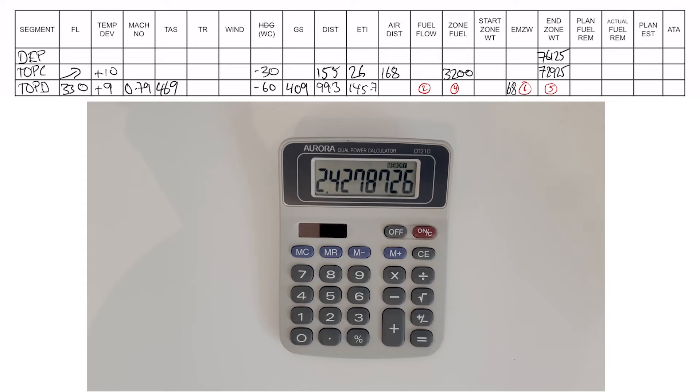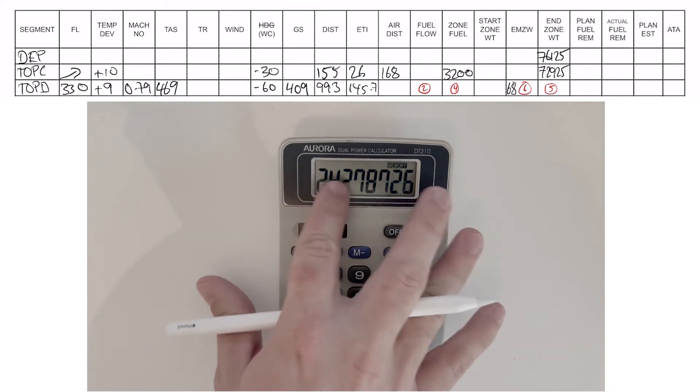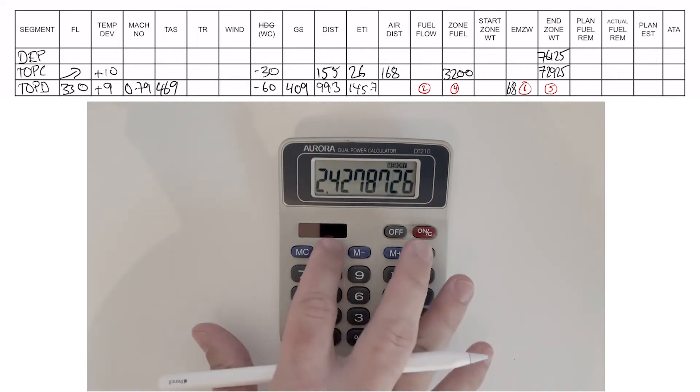Right now I've got an accurate ETI in hours on the scratch pad and an accurate fuel flow per hour in the memory function. To find zone fuel, I'll multiply the ETI by the fuel flow, which is in memory recall. There's our ETI multiplied by memory recall—our zone fuel is 9835.3.